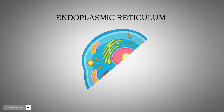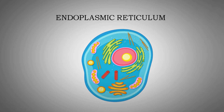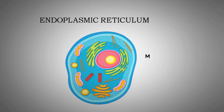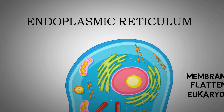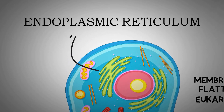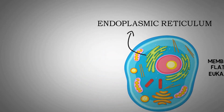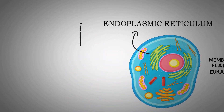Endoplasmic reticulum is a continuous membrane system that forms a series of sacs within the cytoplasm of eukaryotic cells. The endoplasmic reticulum is made up of lipoprotein.